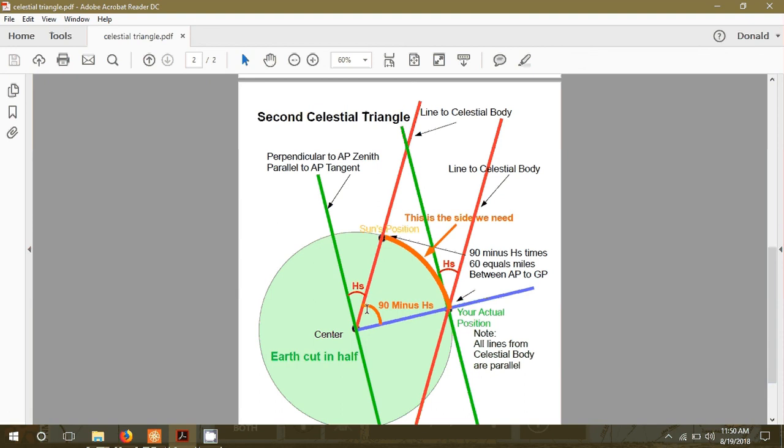This angle is 90 degrees. So if I subtract my HS from it, I get this angle, the orange one. So again, I can multiply that angle by 60 and get the length of the side of the triangle from me to the Sun.